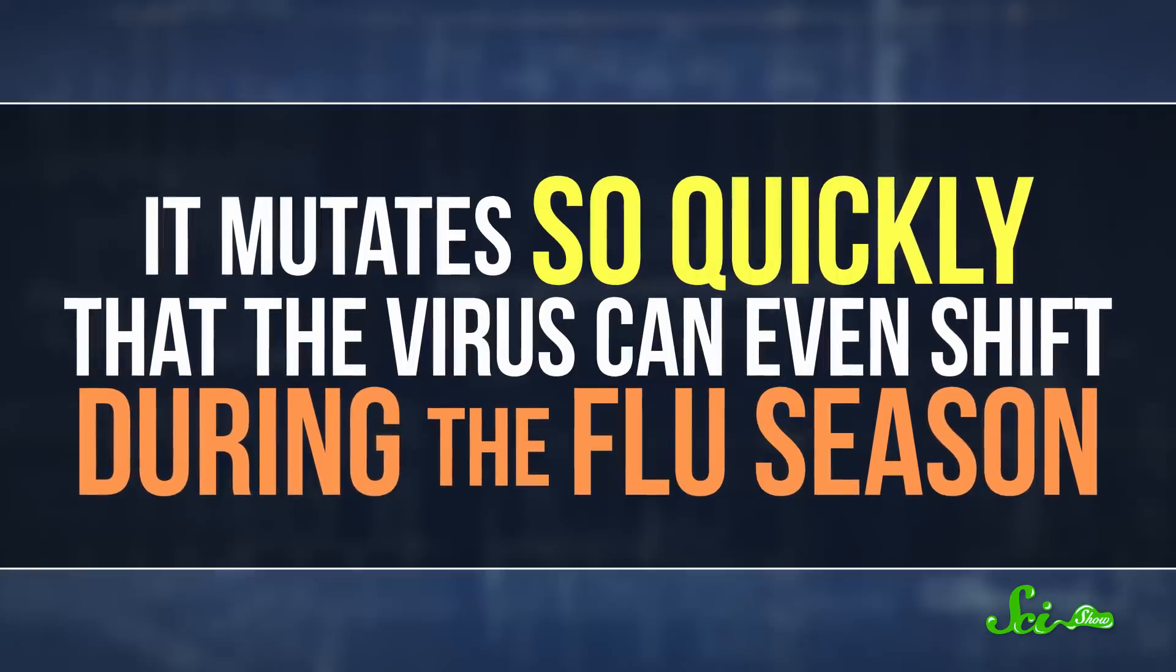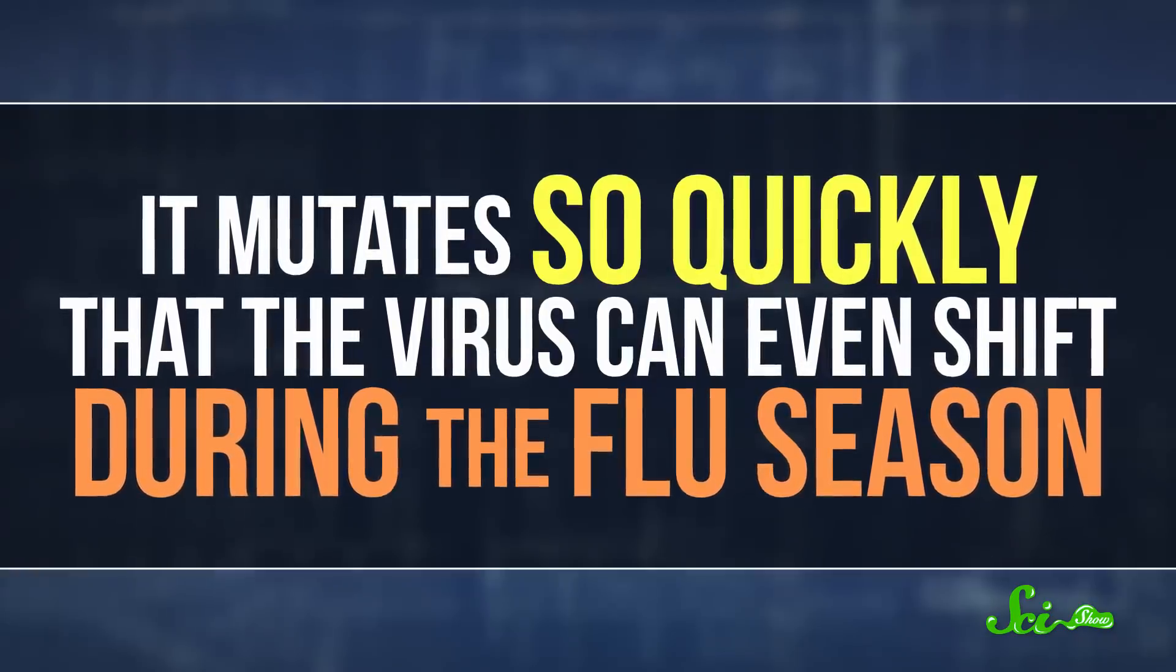It mutates so quickly that the virus can even shift during the flu season. A second complication is that in recent years, the H3N2 viruses we've wanted to vaccinate against are ones that don't grow very well in chicken eggs. That becomes a problem because almost all flu shots are made by growing lots of virus in eggs, and to grow well, the virus can mutate to adapt to chicken cells.